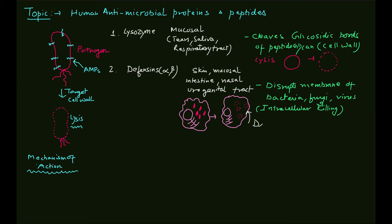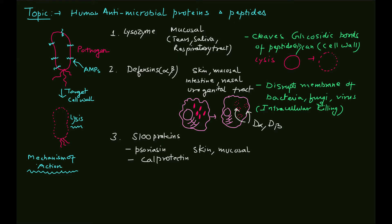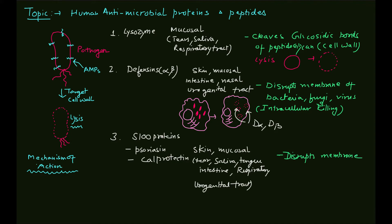Examples of S100 proteins are psoracin and calprotectin. These proteins are present in skin, mucosal surfaces, tears, saliva, tongue, intestine, and respiratory and urogenital tracts. They act as antimicrobial agents by causing membrane disruption and by binding to divalent cations such as Mg²⁺ and Zn²⁺, which are important for maintaining the integrity of the bacterial cell.